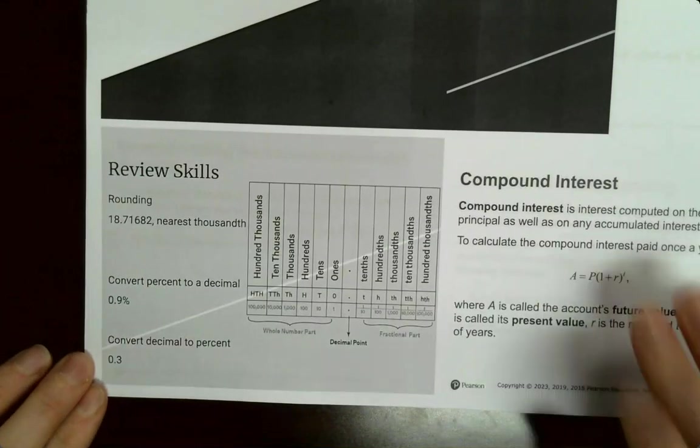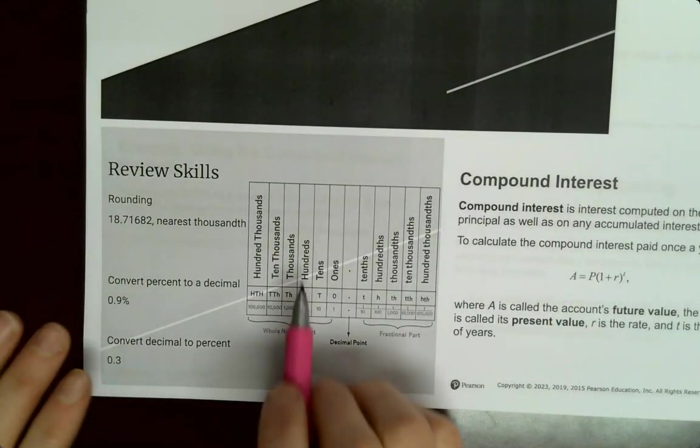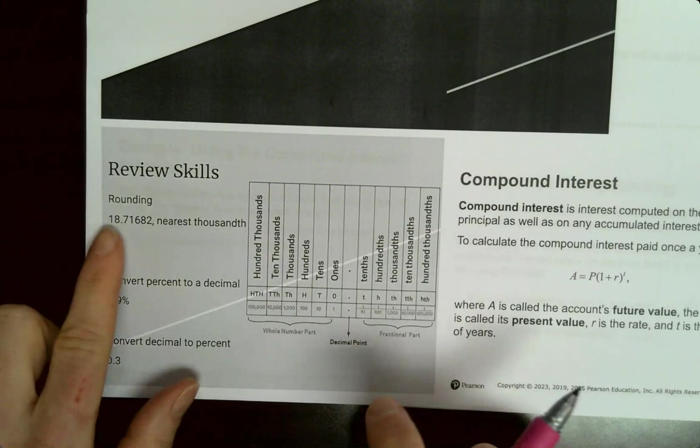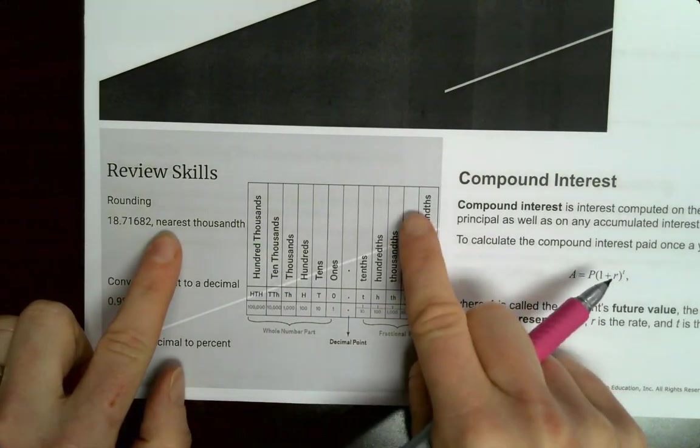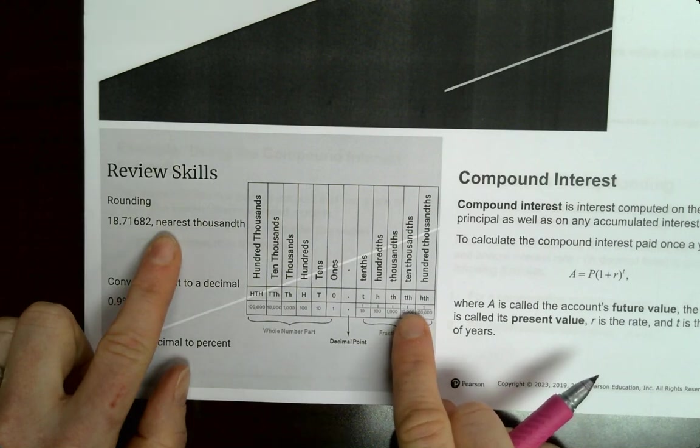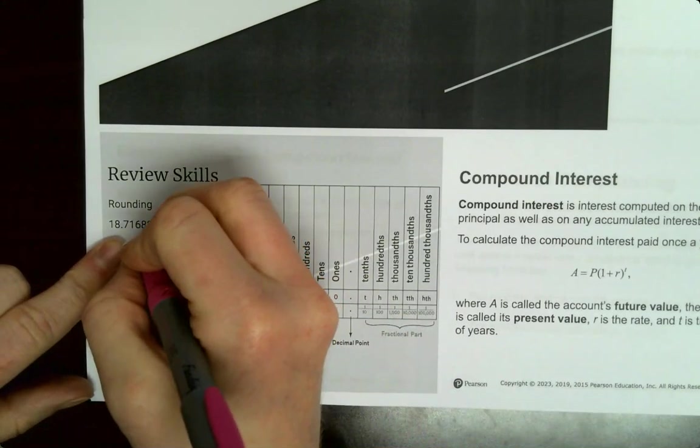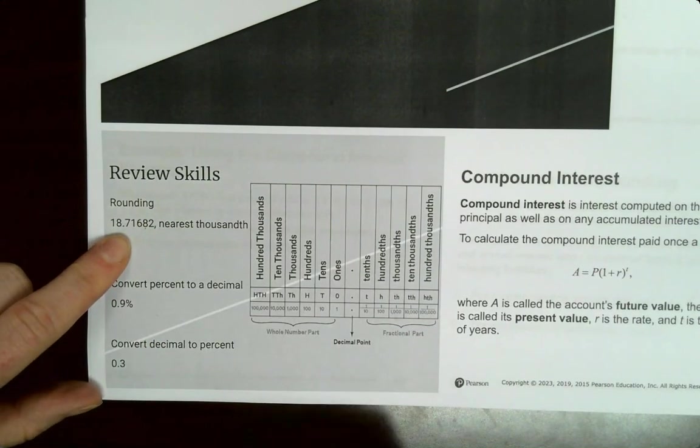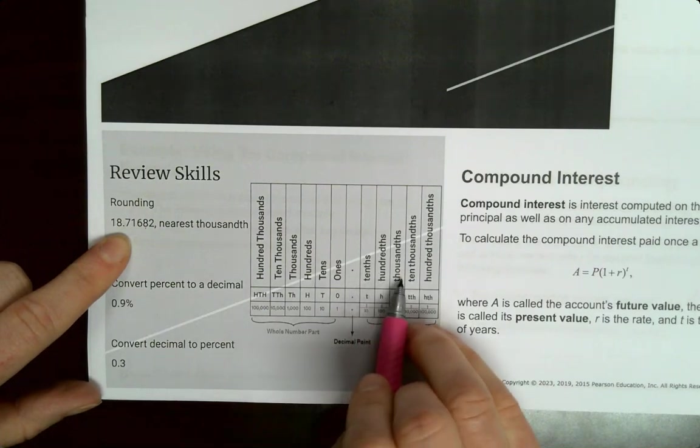Some review skills are with rounding. Rounding to the nearest thousandths, with the th at the end, so it's behind the decimal. It is 1, 2, 3, 4 numbers behind the decimal. So here's the 4 numbers behind. Tenths, hundredths, thousandths.